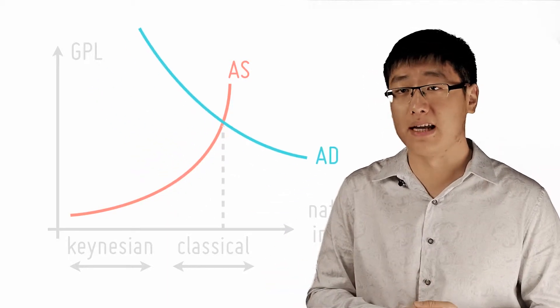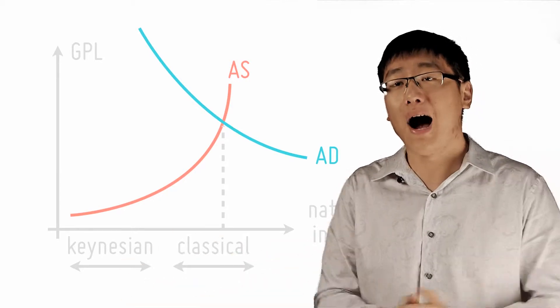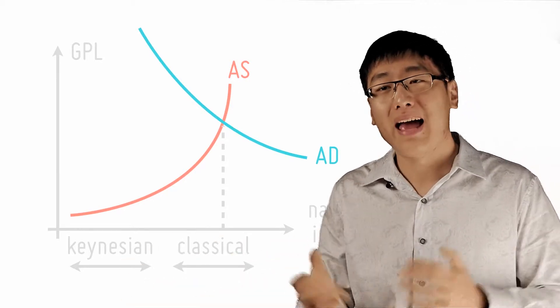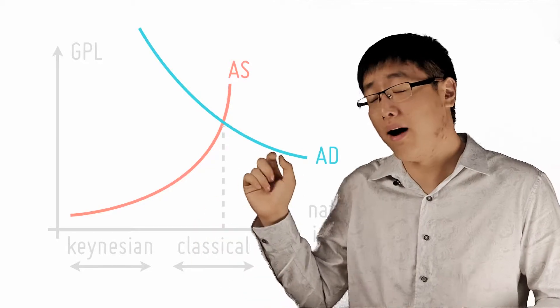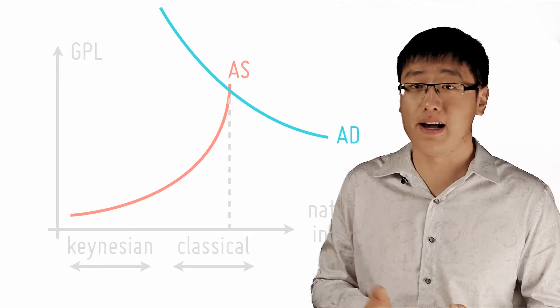However, if you're already producing at the full capacity of the economy, everyone is already employed. How can you still employ more people? Hence, the effects of the expansionary monetary policy, if the central bank is stupid enough to do that at a time of full production, would be purely inflationary.